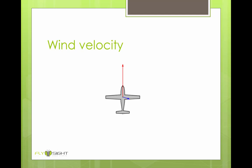The blue arrow shows the wind velocity relative to the ground. Again, the direction of the arrow shows the direction the wind is blowing, and the length of the arrow shows the wind speed. For now, we're going to assume that the wind's speed and direction are constant, so the blue arrow won't change at all.